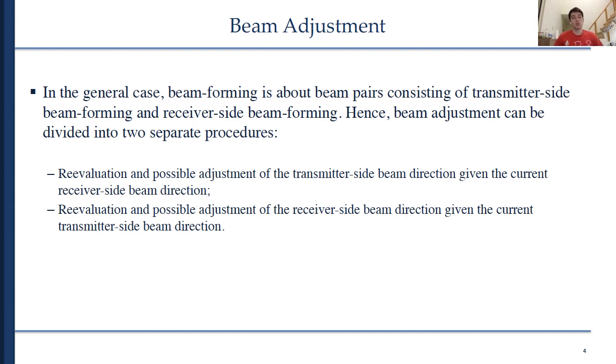This beam adjustment can also include refining the beam shape, for example making the beam more narrow compared to a relatively wider beam used for initial beam establishment. In the general case, beamforming is about beam pairs consisting of transmitter-side beamforming and receiver-side beamforming. Hence, beam adjustment can be divided into two separate procedures.